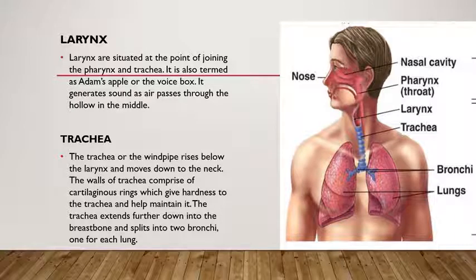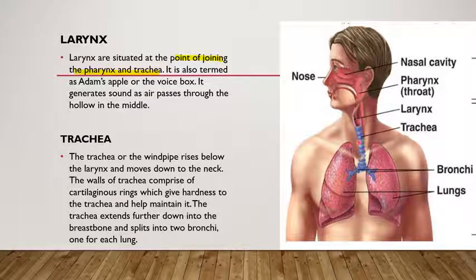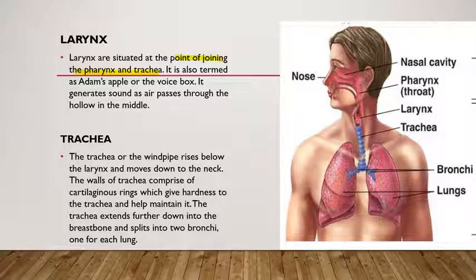The larynx is situated at the point of joining of the pharynx and trachea, located in the neck region. The pharynx region and the blue-colored structure — the trachea — meet at this junction, which is the larynx.